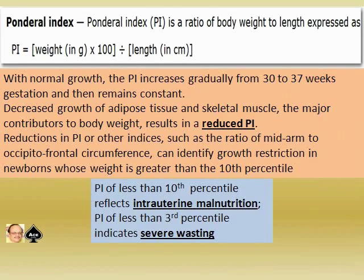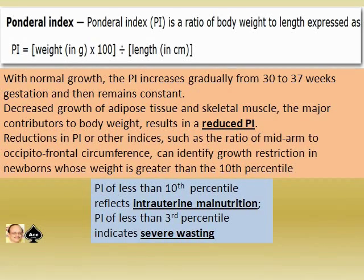Ponderal index is a term you should understand. Ponderal index, or PI, is a ratio of body weight to length, expressed as: PI = weight in grams × 100 divided by length in centimeters cubed. With normal growth, the PI increases gradually from 30 to 37 weeks gestation and then remains constant. Decreased growth of adipose tissue and skeletal muscle, the major contributors to body weight, results in a reduced PI.